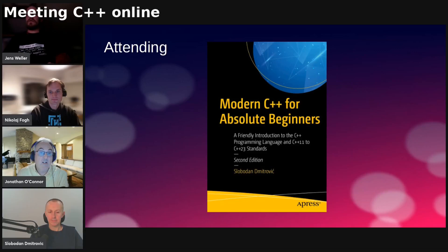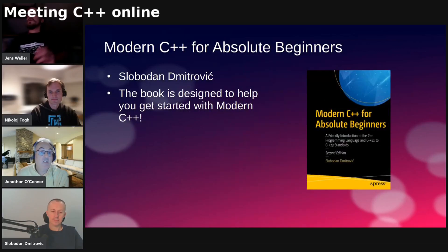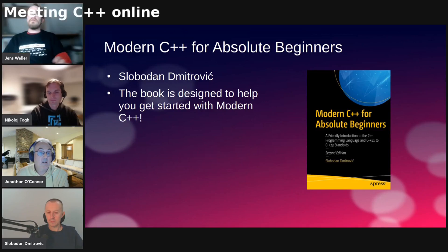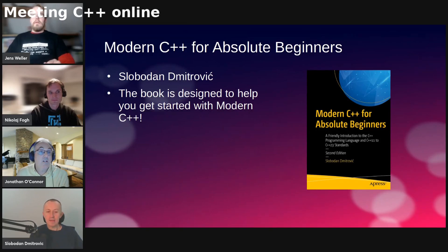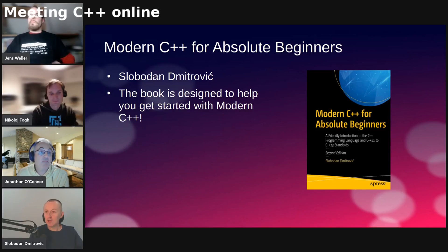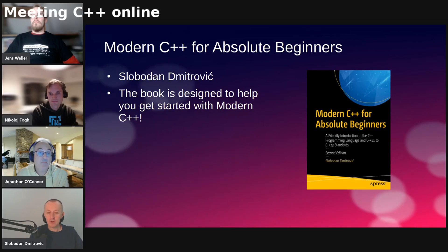Let's get started about this book, Modern C++ for Absolute Beginners, with Slobodan Dmitrovic. My name is Slobodan Dmitrovic. I am a professional C++ trainer, and I'm also the author of this book, which is called Modern C++ for Absolute Beginners. But I like to refer to my book by its second title, which is A Friendly Introduction to C++.